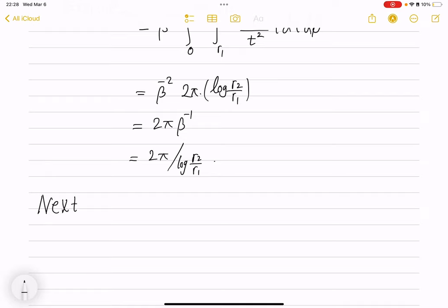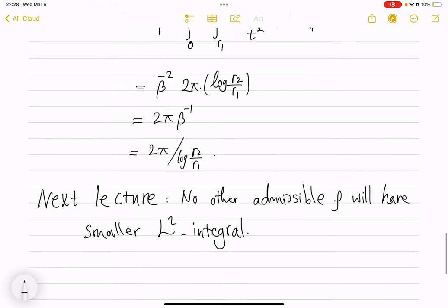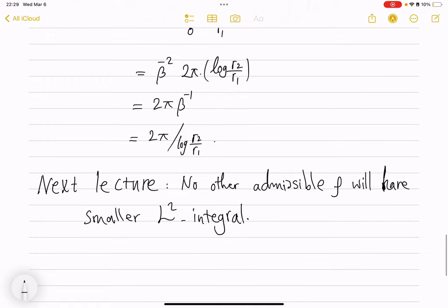So, next lecture, I'm glad that I broke this down into two lectures, is that any other admissible... So, no other admissible function, no other admissible ρ will have smaller L2 integral. So, that will happen next session. If you have any questions about this proof, if you have any doubts especially, please put them in the comments. And we'll see you with the rest of the proof next.